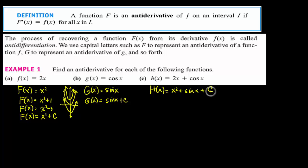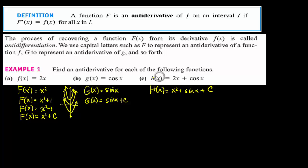Remember, when you take the derivative, the derivative of a constant is 0. So when you take the derivative of H of x, you get 2x plus the derivative of sine, which is cosine, plus 0. So you get back little h of x.